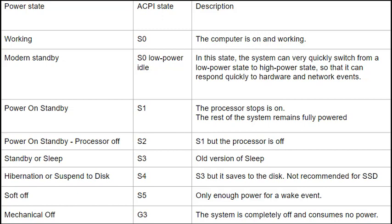Now, with S1 through S3, this uses the RAM to store your current state. This means the RAM keeps its power, and if it ever loses it, then it's as if you turned it completely off. In S1, the CPU has stopped, the RAM kept its power, but everything else is in low power mode. Note, S1 consumes less power than S0.